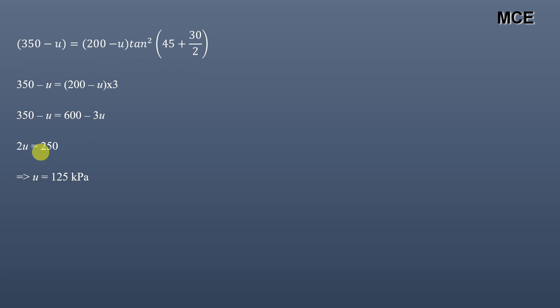So for this test on the same clay specimen in the consolidated undrained condition, the pore water pressure developed is 125 kilopascal. This is how you can calculate the pore water pressure for a consolidated undrained triaxial test if you have data from the consolidated drained test for the same specimen. I hope this solution was clear. If you find my videos helpful, please share and subscribe. Thanks for watching and stay tuned.